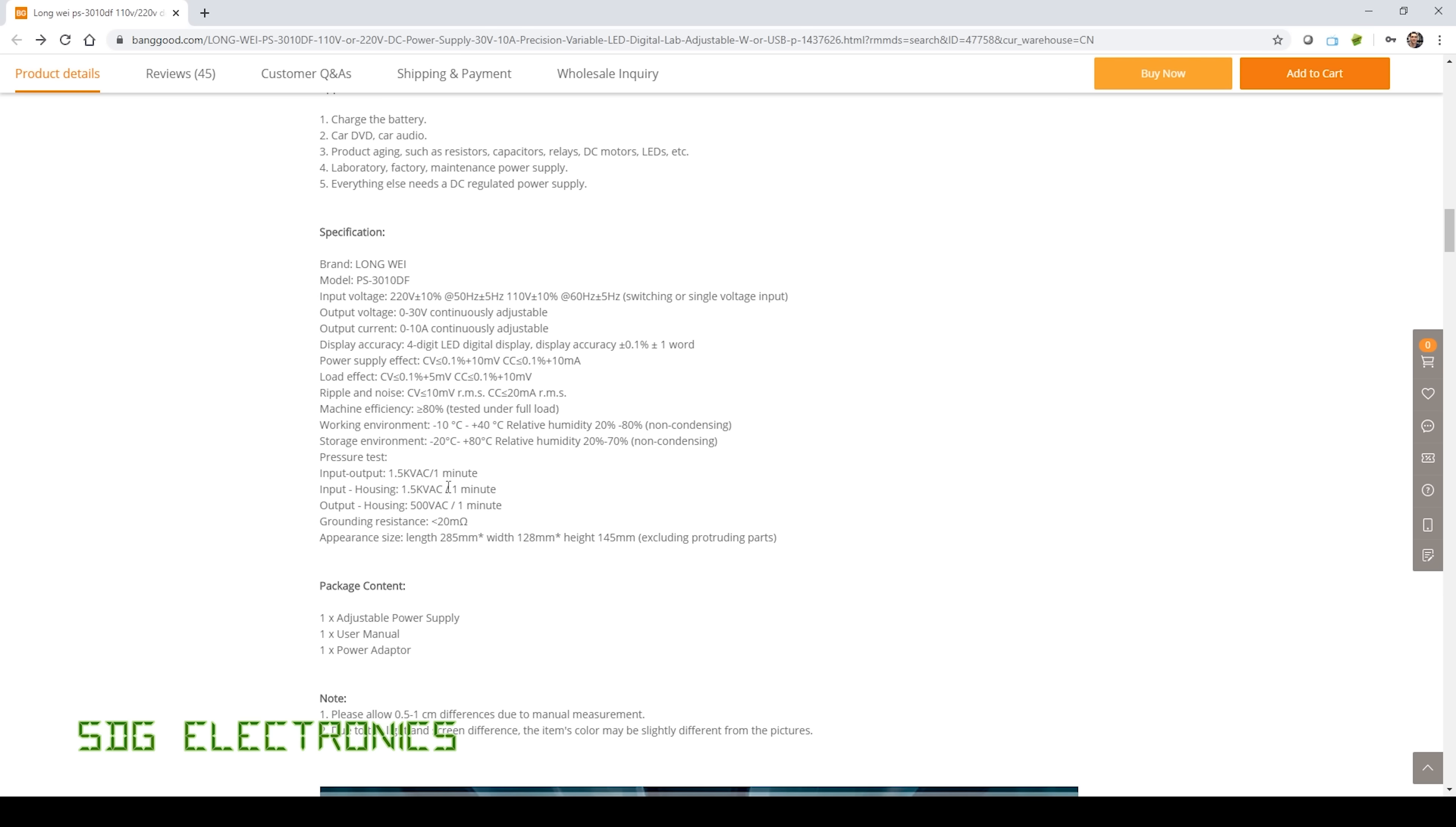And then they've also done high pot tests, so 1.5 kilovolt isolation input to output, 1.5 kV input to the chassis, and then output to the housing, 500 volts AC, so fairly standard figures.